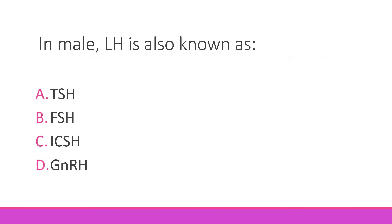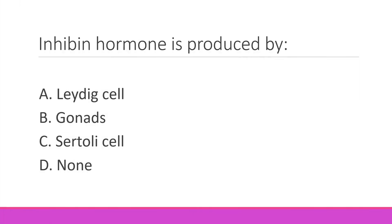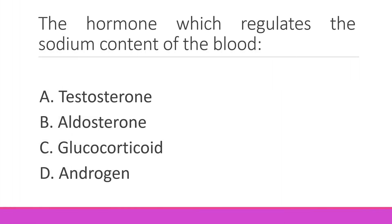This hormone is also known as interstitial stimulating hormone. This hormone is produced by Sertoli cells. The hormone which regulates the sodium content of the blood is aldosterone, and it acts on the ascending limb of the loop of Henle.